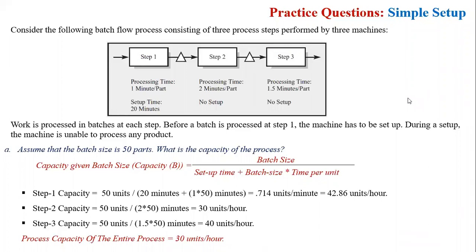So what is the capacity of the process? As you know, if we know the batch size, then we can calculate the capacity. The formula for that is: batch size divided by setup time, plus batch size multiplied by time per unit.